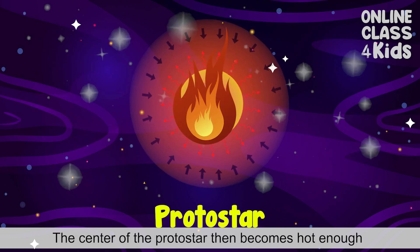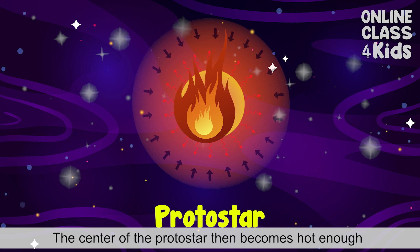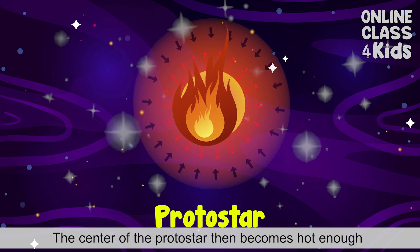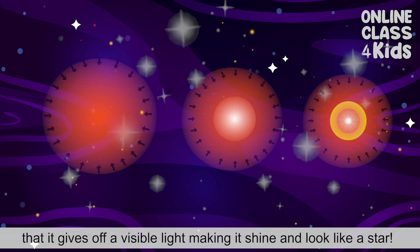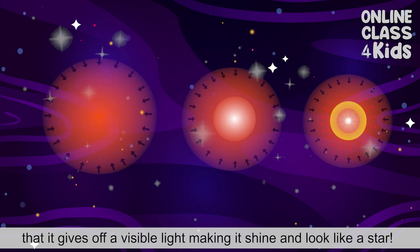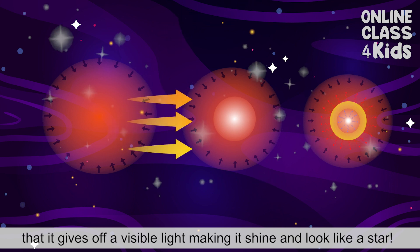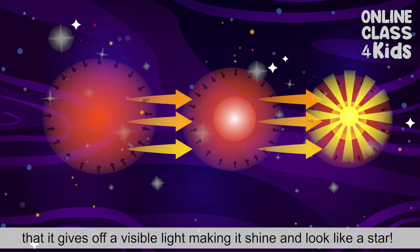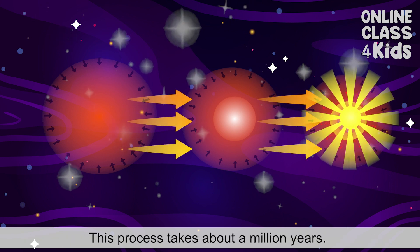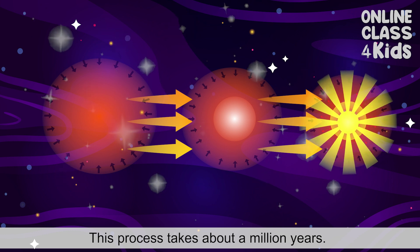The center of the protostar then becomes hot enough that it gives off a visible light, making it shine and look like a star. This process takes a million years.